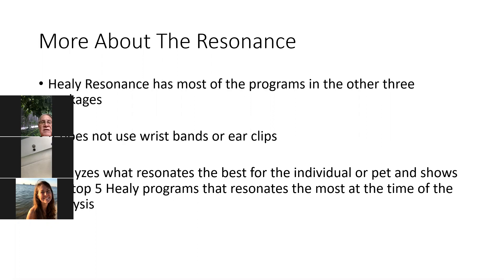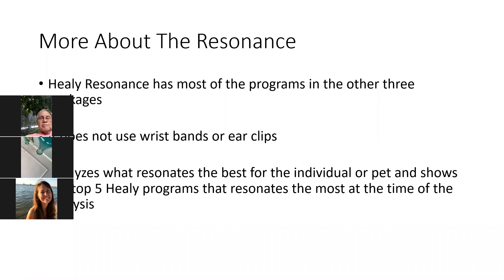Healy Resonance has most of the programs that are in the other three packages — Gold, Holistic, and Holistic Plus — about 180 programs in total. When you have a Resonance, you're working with 300,000 frequencies across all these programs. The Resonance does not use wristbands or ear clips, and it's the only version of the Healy that does analysis. It analyzes which programs will resonate with you the most at the time you do the analysis — 10 minutes later it may show different results because we're constantly changing.